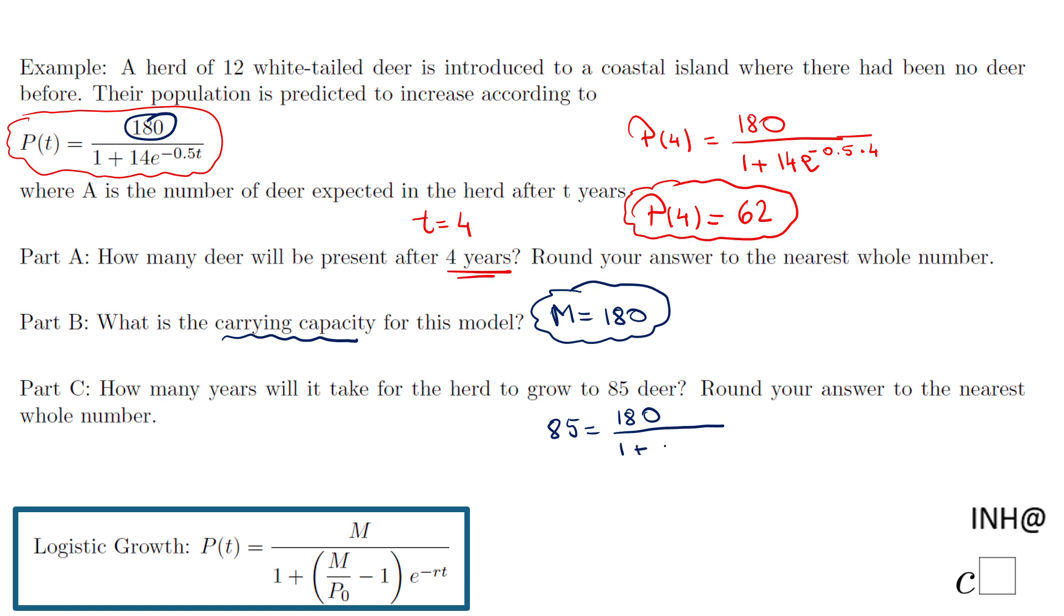So in fact, what we have now here, we have P(t) = 85 equals 180 over 1 plus 14 times e to the power of negative 0.5t. This is an equation where we need to find this t.